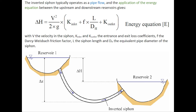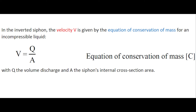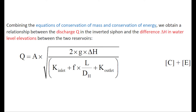The inverted siphon typically operates as a pipe flow. Applying the energy equation between the upstream and downstream reservoirs gives a relationship between the drop in reservoir elevation delta H and the velocity in the siphon. The velocity V is further given by the equation of conservation of mass: the velocity being the volume discharge divided by the cross-sectional area of the siphon. Combining these two equations, we obtain a relationship between the discharge Q in the inverted siphon and the difference delta H in water level elevation between the two reservoirs.